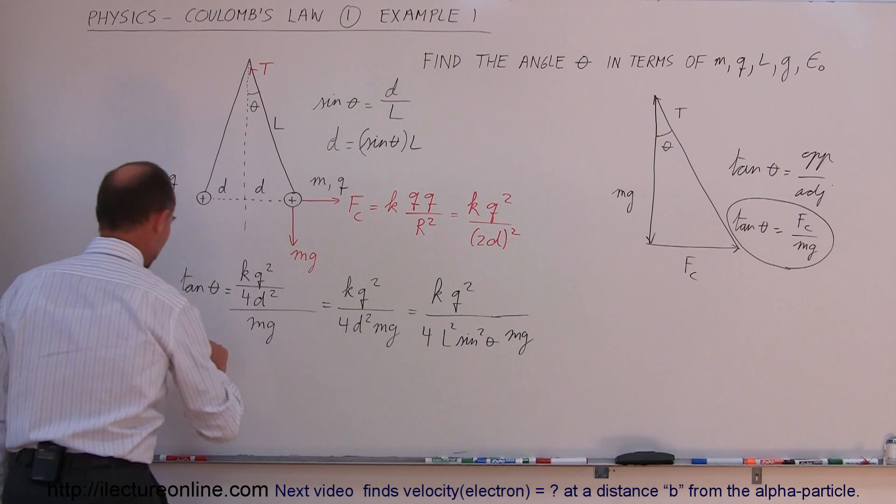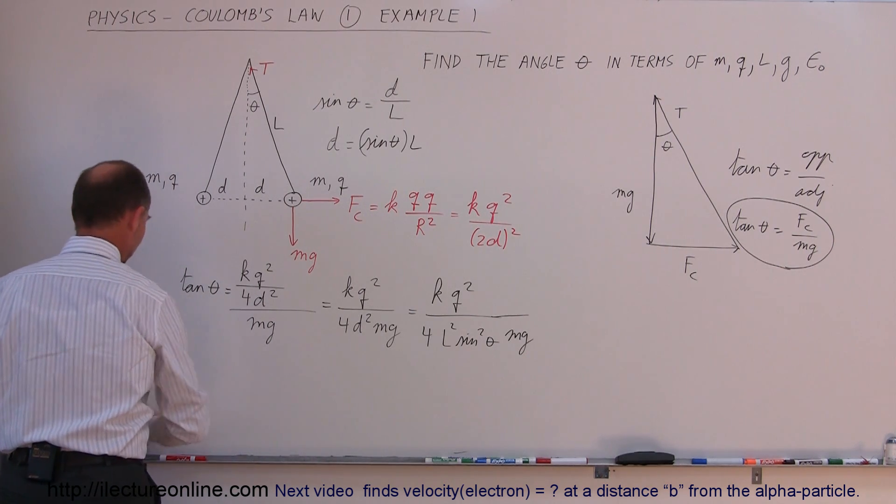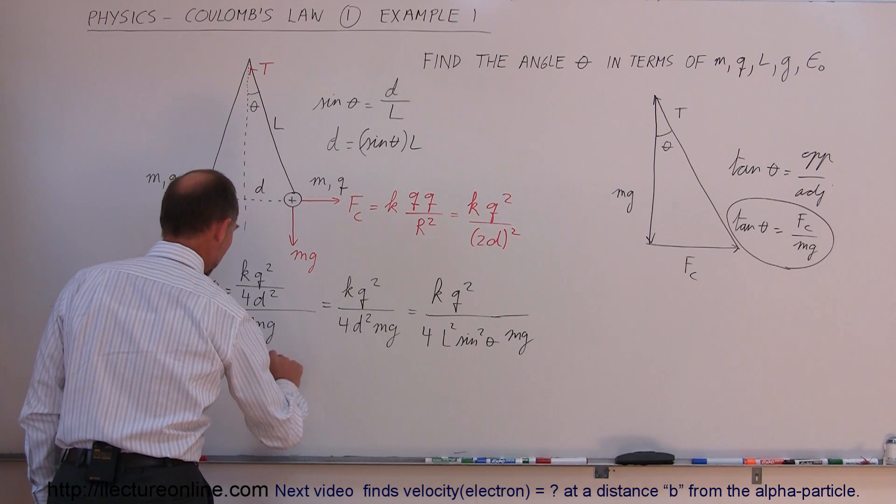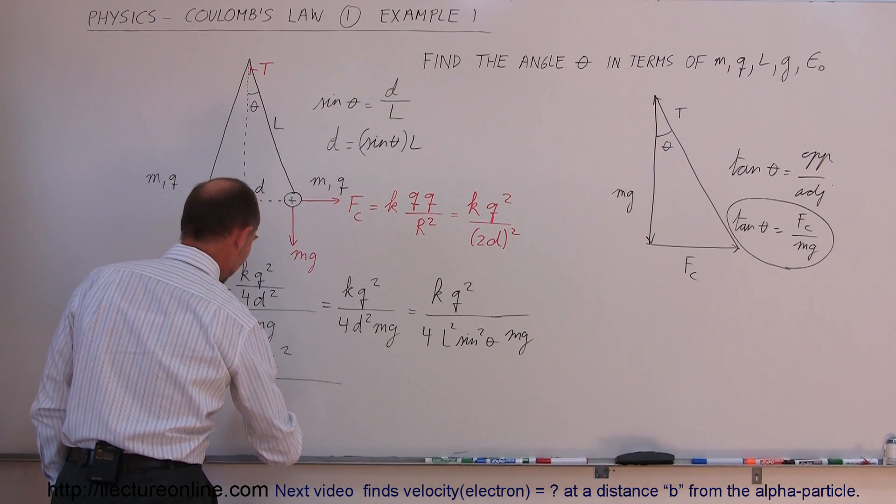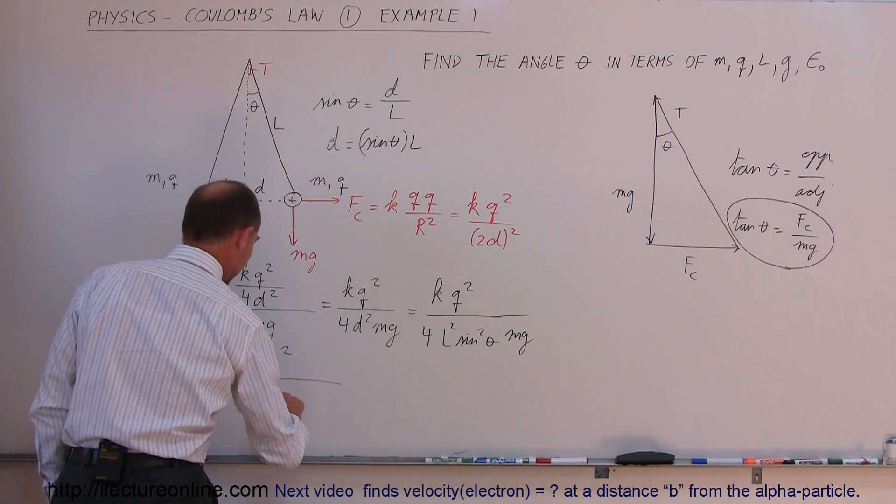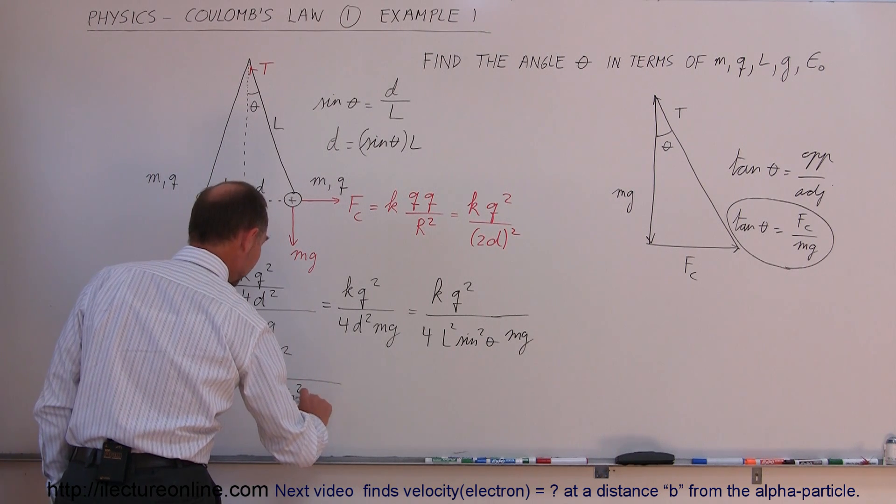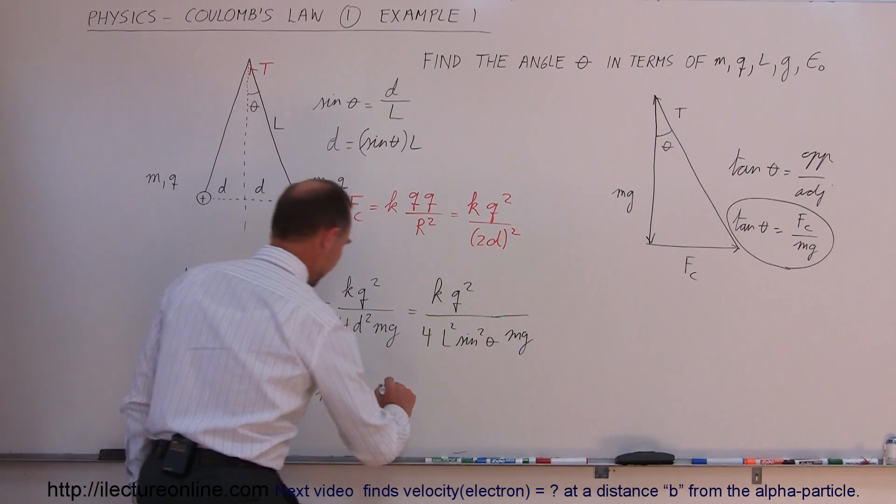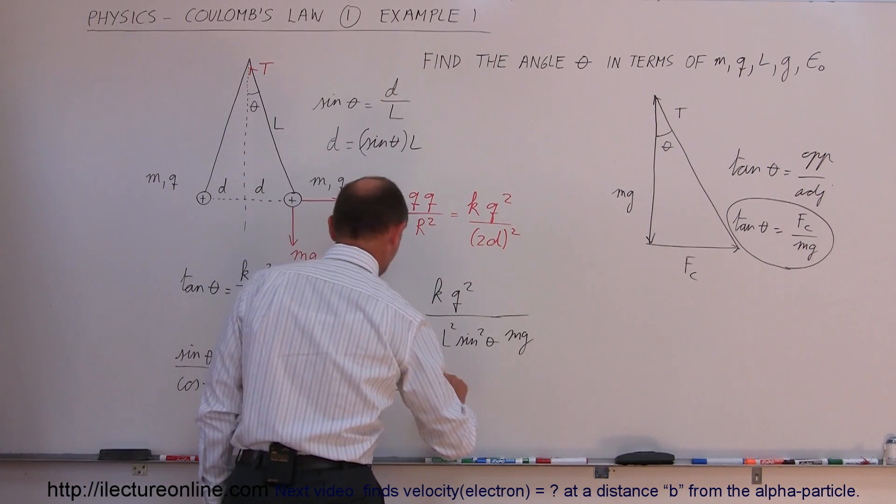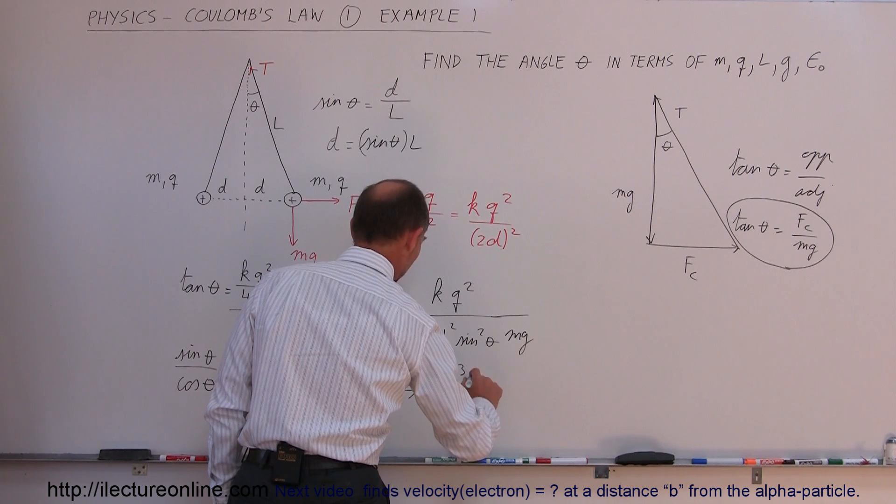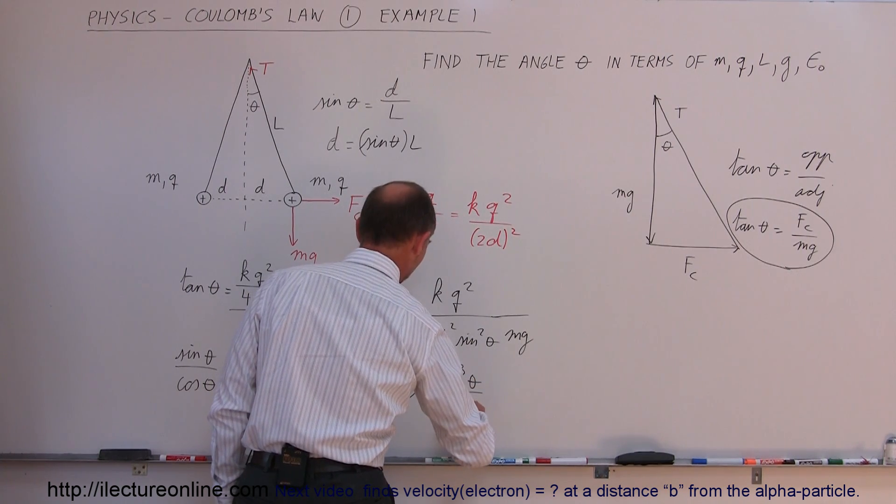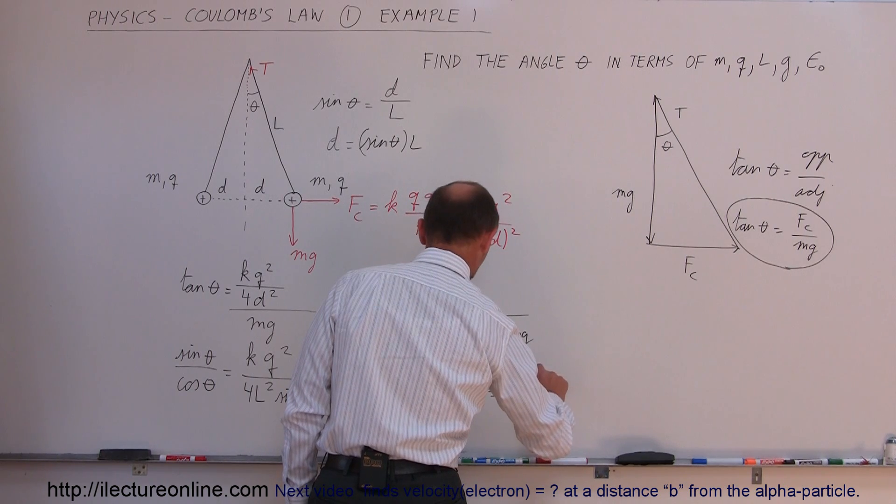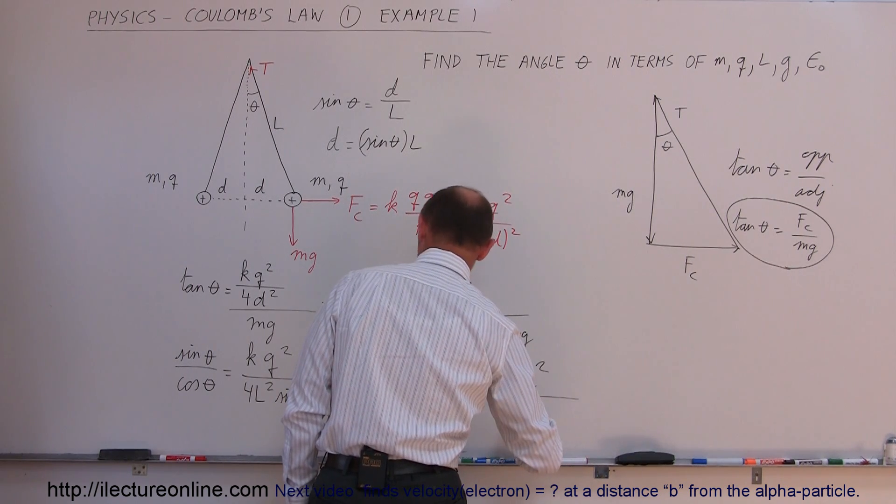Now we realize we have the tangent of theta, which is the sine divided by the cosine. So I can write it as the sine divided by the cosine is equal to K Q squared divided by 4L squared sine squared of theta times M G. Now I can take the sine squared theta and move it over here, so I get the sine cube of theta divided by the cosine of theta is equal to K times Q squared divided by 4L squared times M times G.